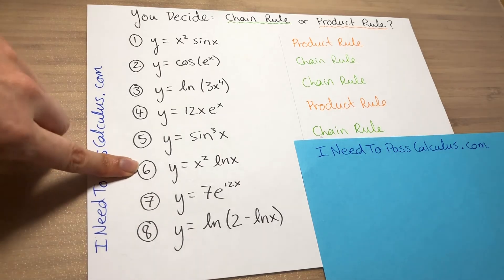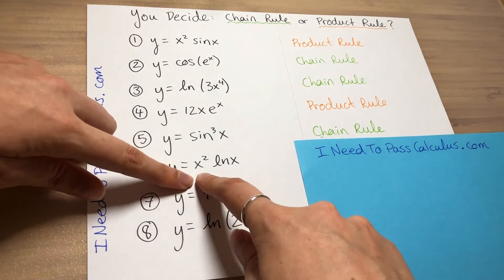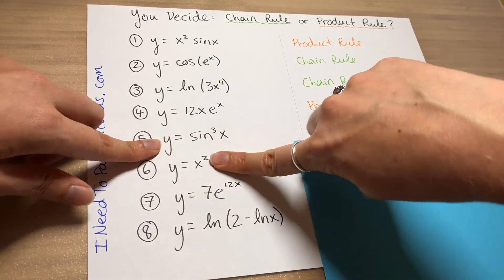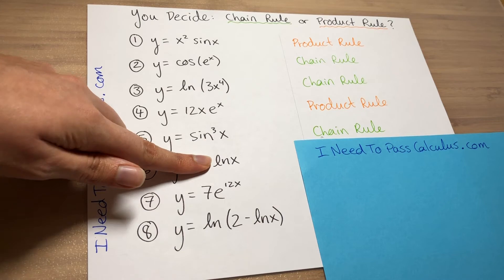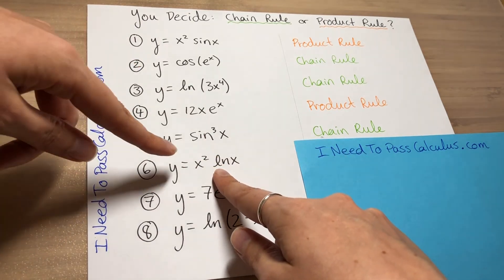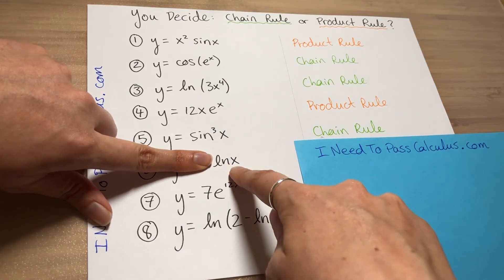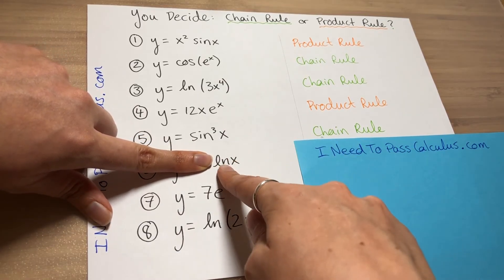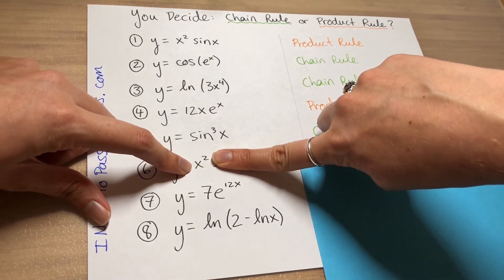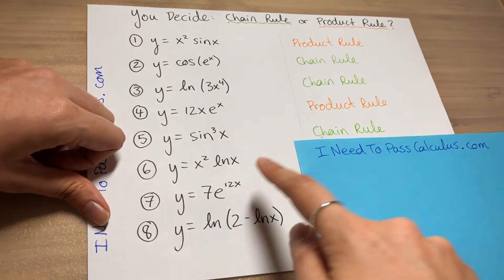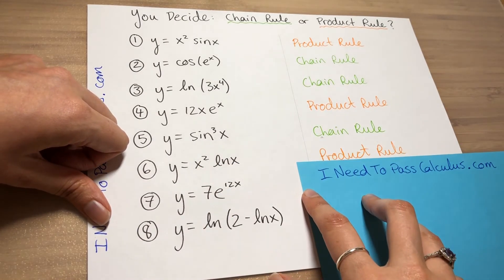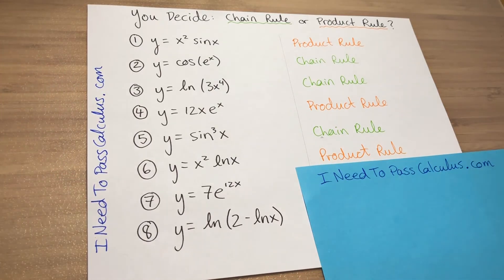Problem six. So for this one we look at our two main parts of our function. We have an x squared part and we have an ln x part. And in this case, unlike the previous ln problem, this guy is actually a full ln x. So this guy by itself is a standalone function. And the x squared is a perfectly fine standalone function. So that's a hint that these guys are glued together with multiplication. And this is going to be a product rule problem.